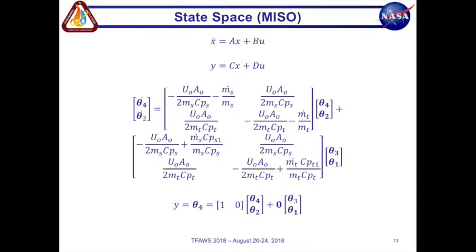And our output what we want to see is our theta two and theta four. And since we have multiple inputs and we only care about the shell we have a MISO system, a multiple input single output. And using our energy balance you can plug those variables into our state space model.